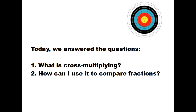So what have we done? We've talked about what cross-multiplying is: it's multiplying one numerator to the other denominator and then going back the other way. And how can I use it to compare fractions? The bow-tie method tells us that when we cross-multiply, whichever side has the greater answer is the greater fraction.